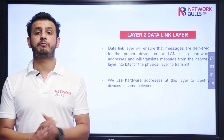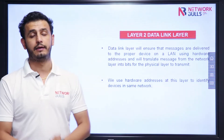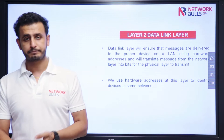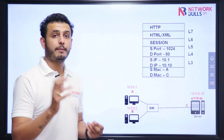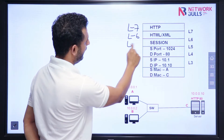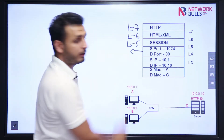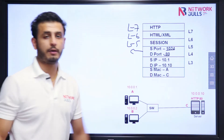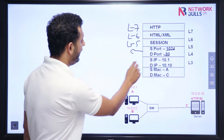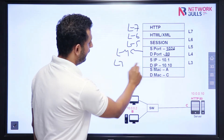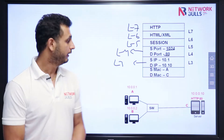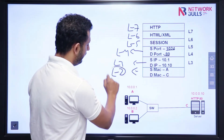At the Data Link Layer, MAC addresses are added to the data coming from the upper layers. MAC addresses are used to forward information to a particular device in a network. At Layer 4, the Transport Layer, we add source port and destination port — the source port is always a random port and the destination port is always a predefined port. At the Network Layer we add source IP address of the sender and destination IP address of the receiver.